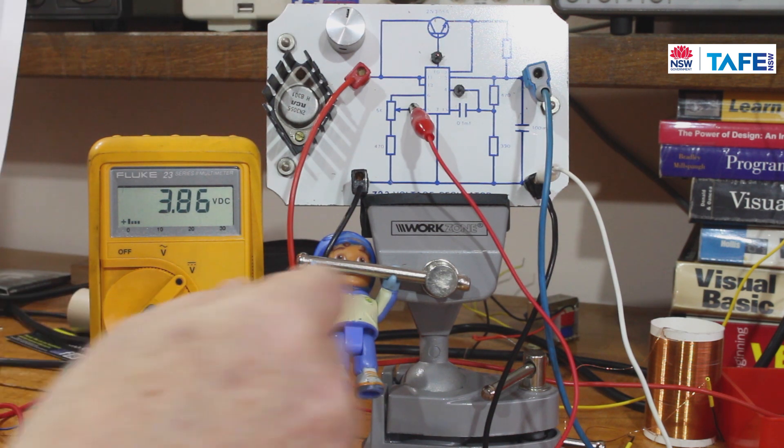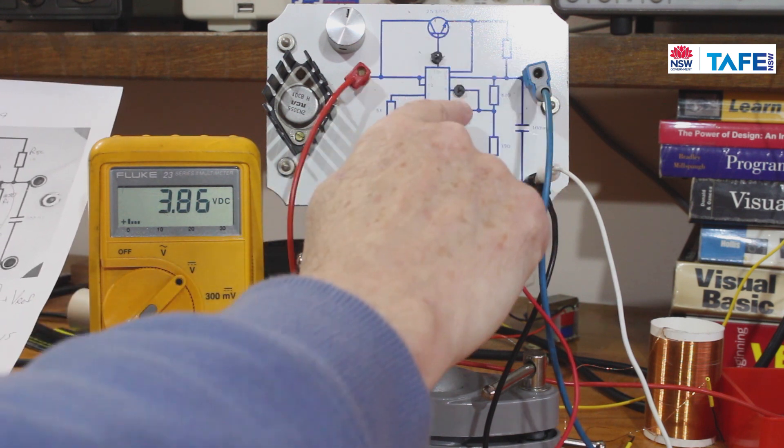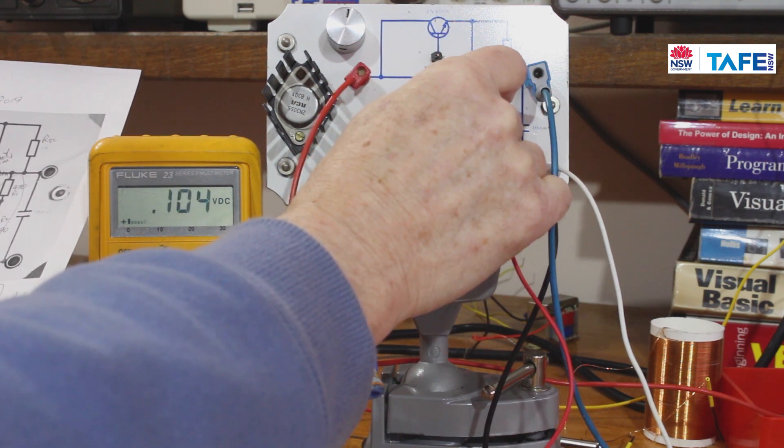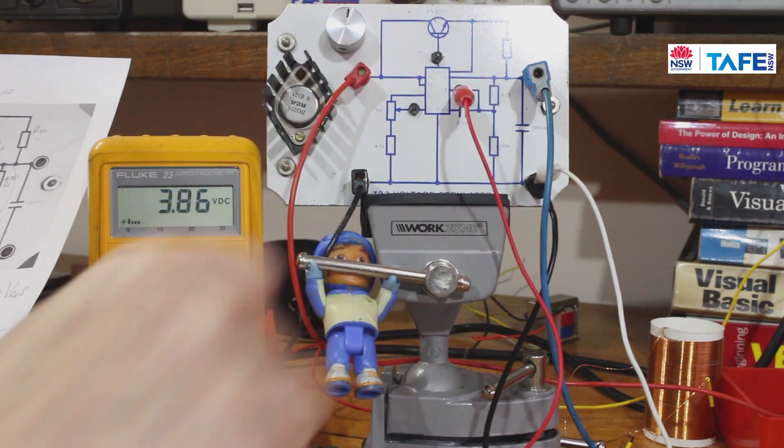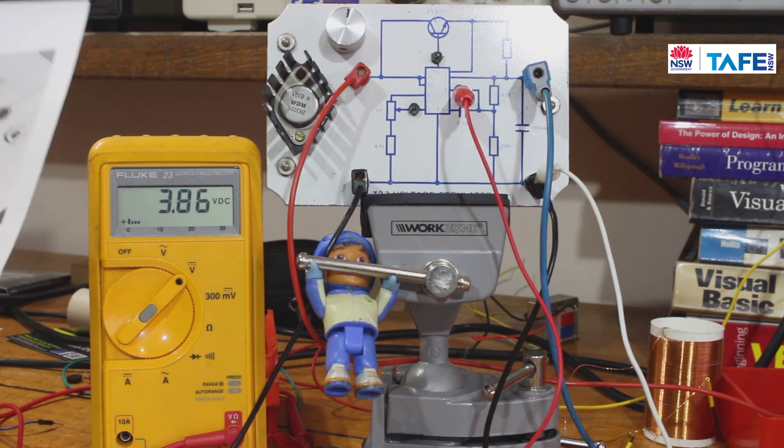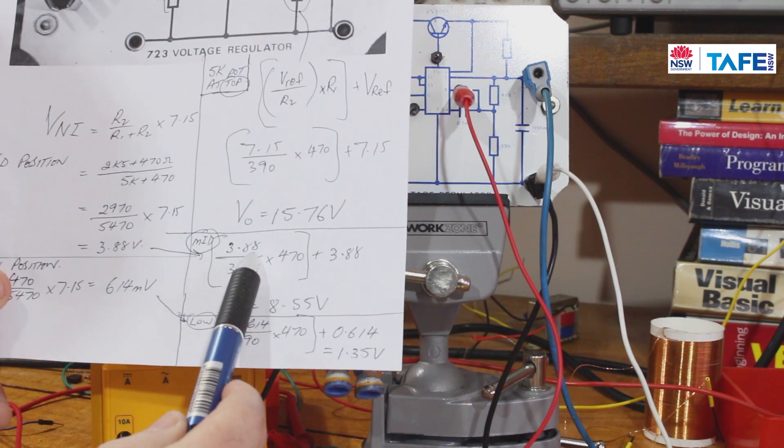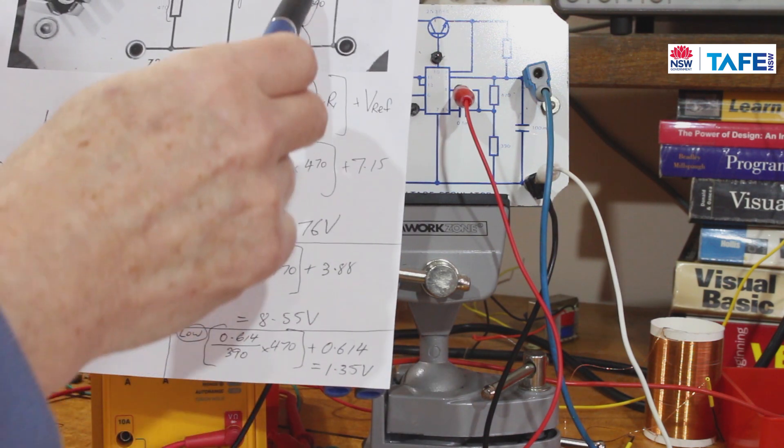There we are, close enough, 3.86 volts. Ideally, what should we have over here? We should have exactly the same, 3.86 volts. 3.86 volts, smack on.